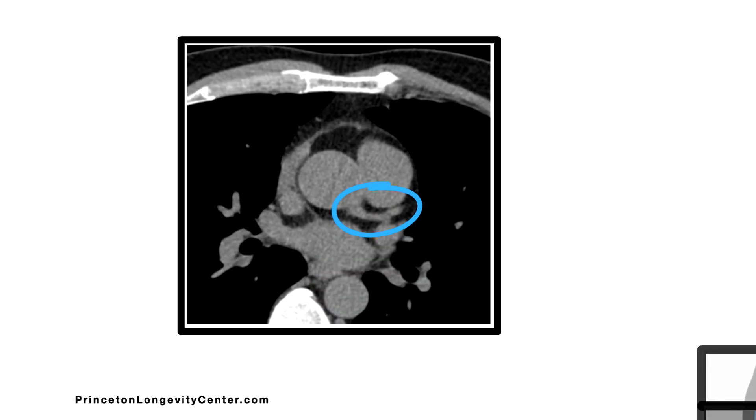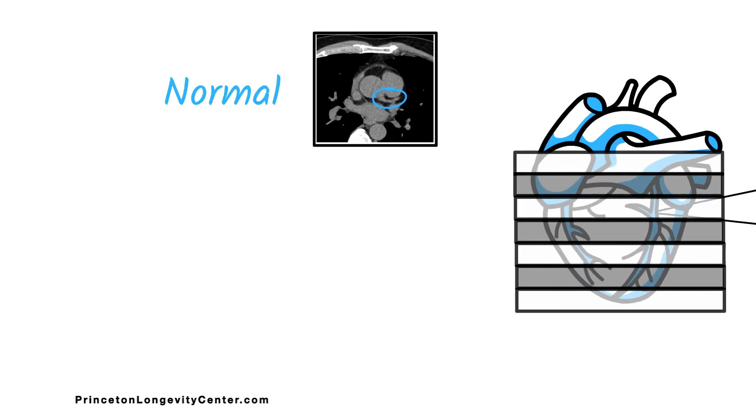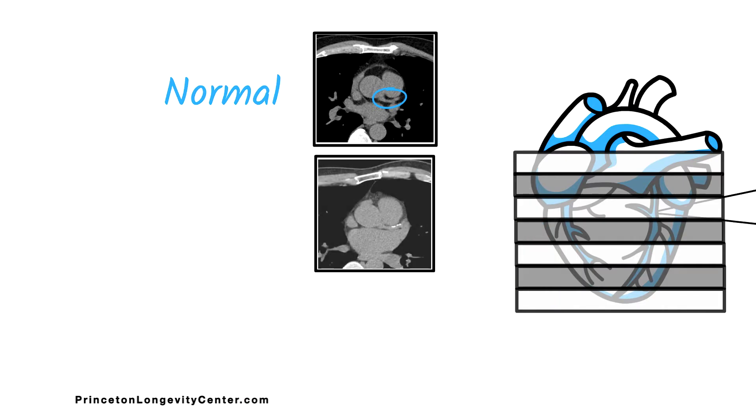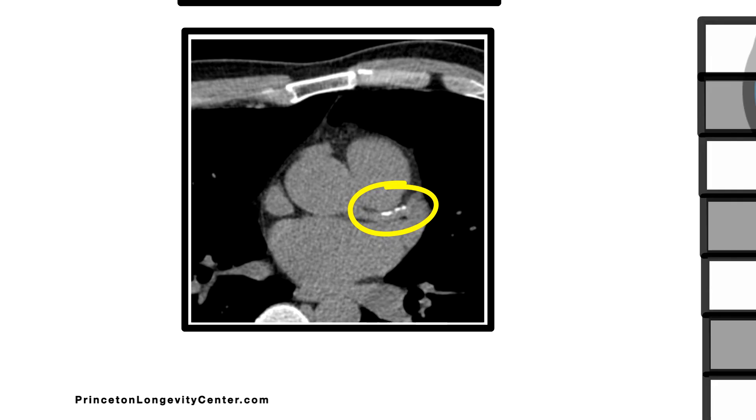This is how a normal coronary artery looks. You can easily see that there's no calcified plaque. Here's a similar image from a different patient, and you can see that there is moderate calcified plaque in this coronary artery.